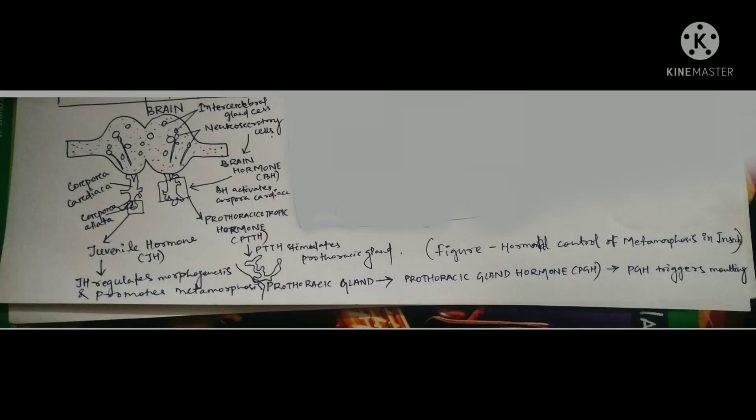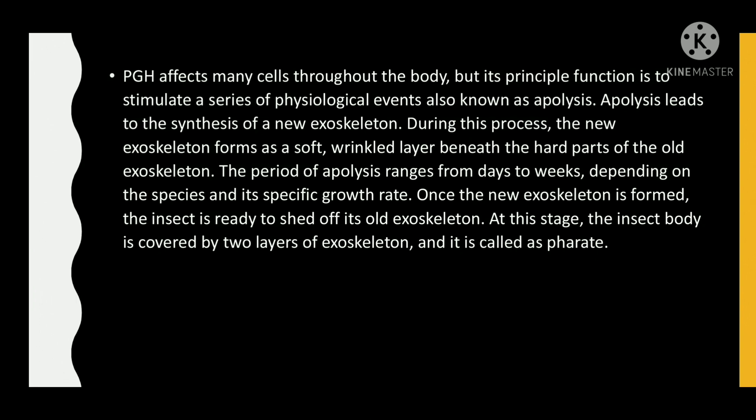This is the figure of hormonal control of metamorphosis in insects. PGH affects many cells throughout the body, but its principal function is to stimulate a series of physiological events also known as apolysis. Apolysis leads to the synthesis of a new exoskeleton. During this process, the new exoskeleton forms as a soft, wrinkled layer beneath the hard parts of the old exoskeleton. The period of apolysis ranges from days to weeks depending on the species and its specific growth rate. Once the new exoskeleton is formed, the insect is ready to shed its old exoskeleton. At this stage, the insect body is covered by two layers of exoskeleton and it is called pharate.